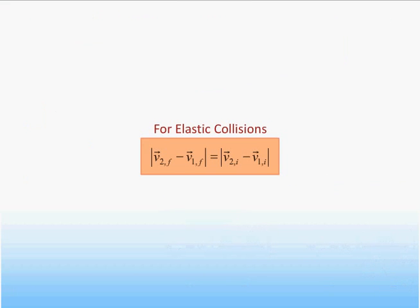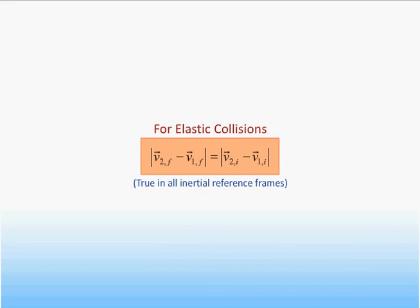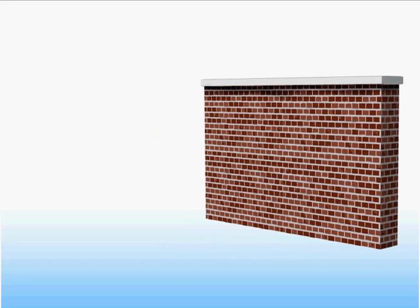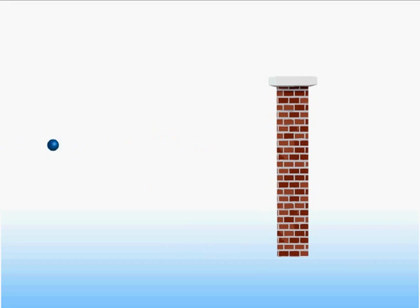We just showed that in an elastic collision between two objects, the rate at which the objects approach each other before the collision is the same as the rate at which they separate after the collision, and that this statement is true in all inertial reference frames. For example, here we see a ball thrown against the wall of a building. If the wall is hard and solid and the ball is made of good hard rubber, then the collision will be almost elastic and we expect the speed of the ball to be about the same before and after it bounces off the wall.